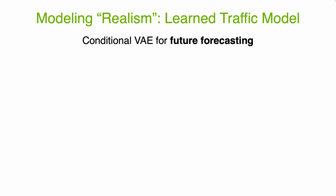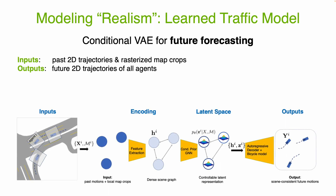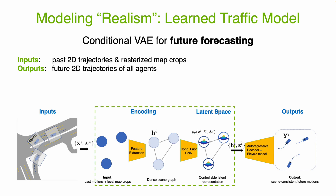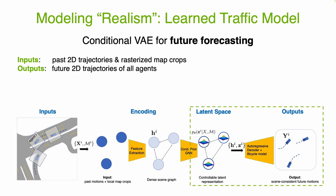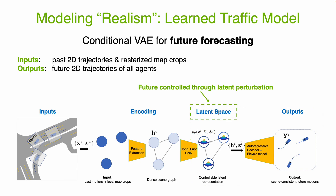At the core of Strive is a generative model of traffic that captures realistic scenarios. We formulate traffic modeling as a future forecasting problem. The model inputs are the past trajectories and map crops for all agents in a scene. Using a graph neural network, these inputs are encoded to a latent distribution at each agent. Then, by sampling from this distribution and decoding, the model gives one possible future trajectory for all agents. Importantly, by modifying the latent vectors of agents before decoding, we can control the predicted future.